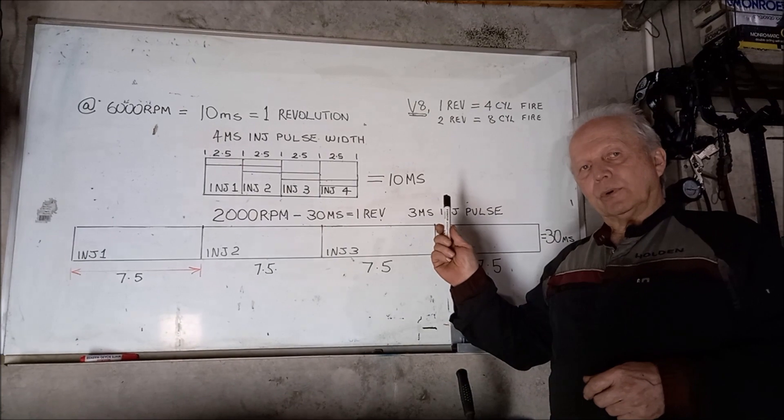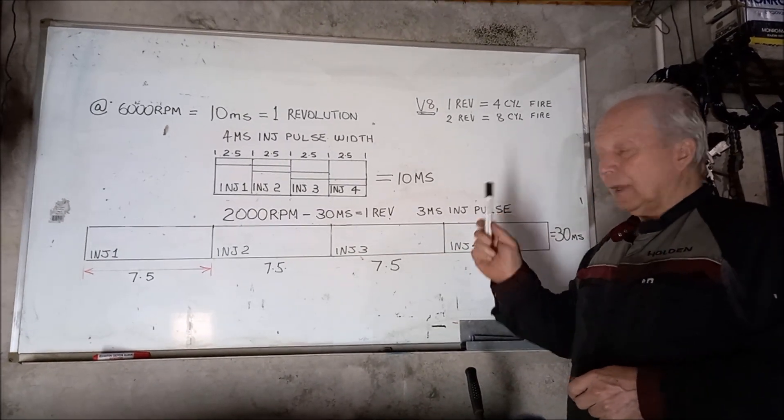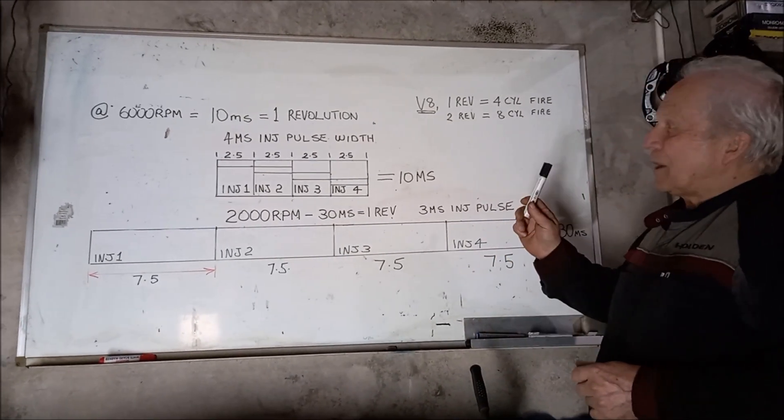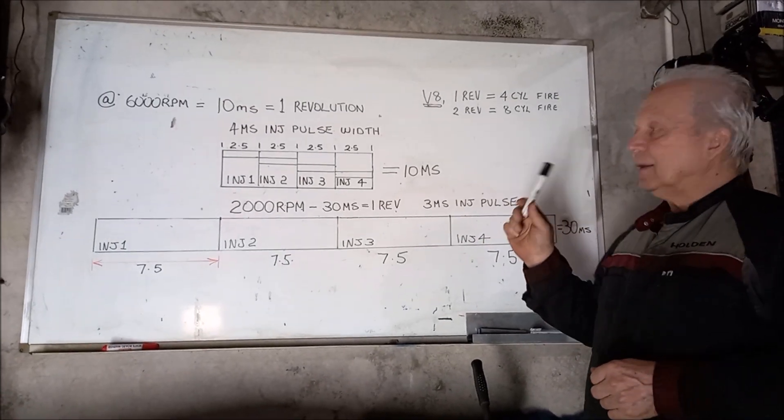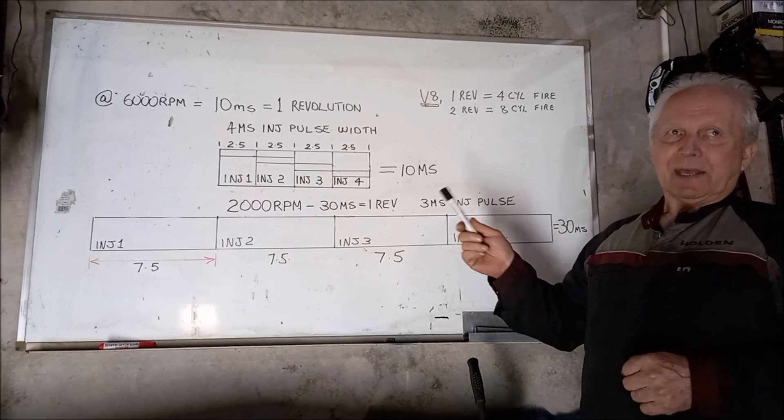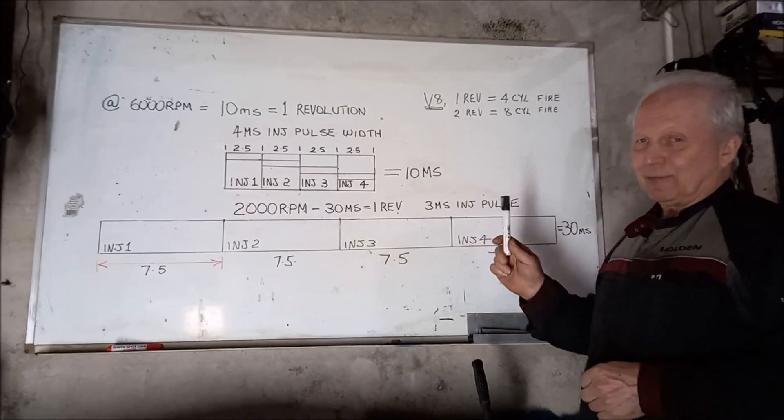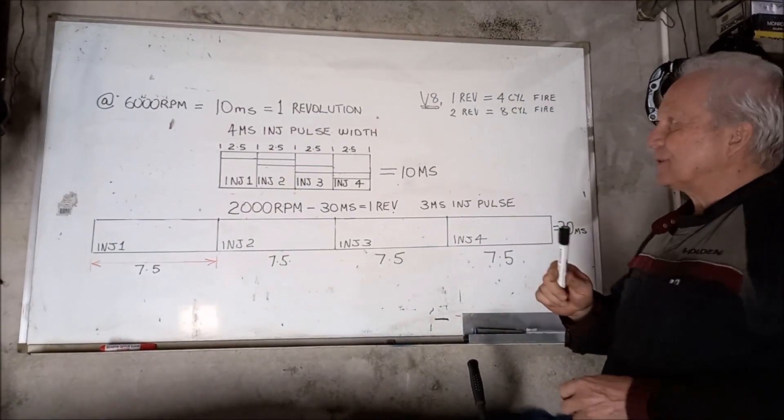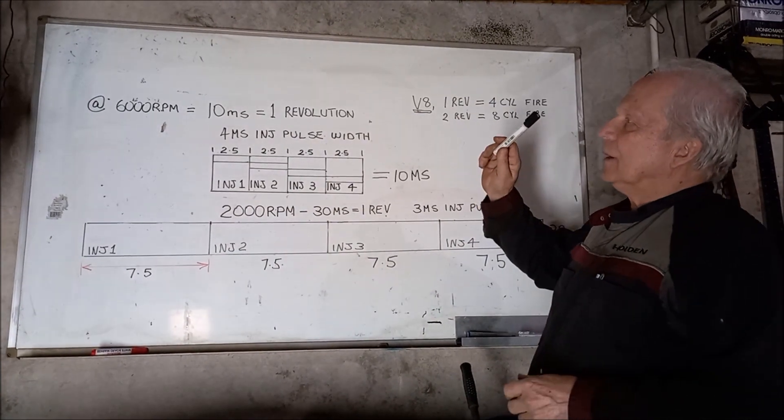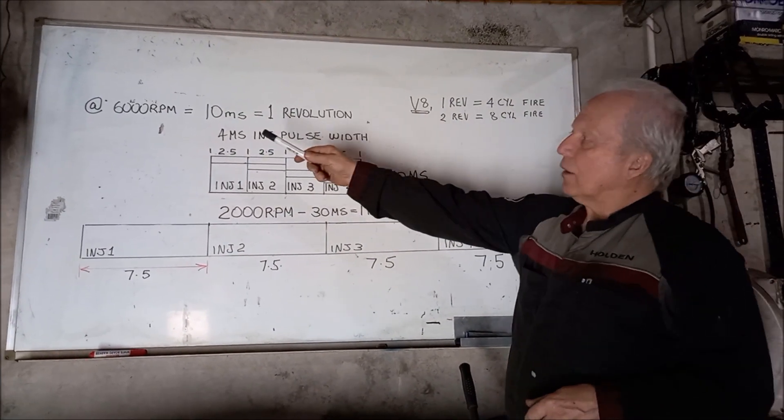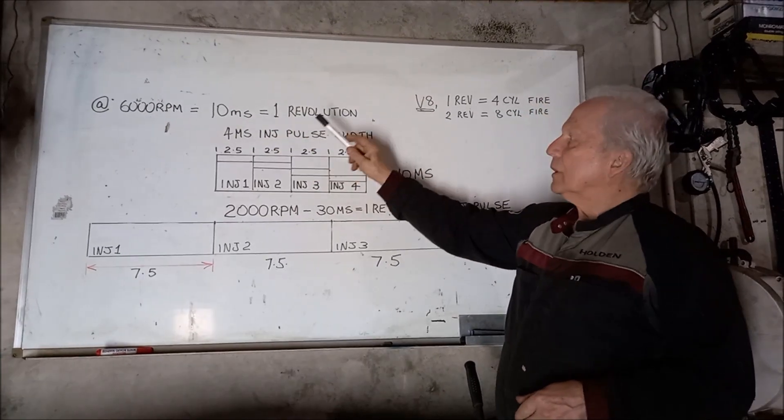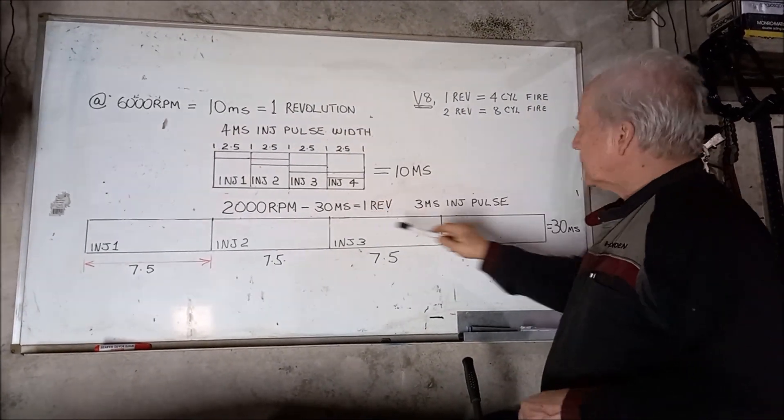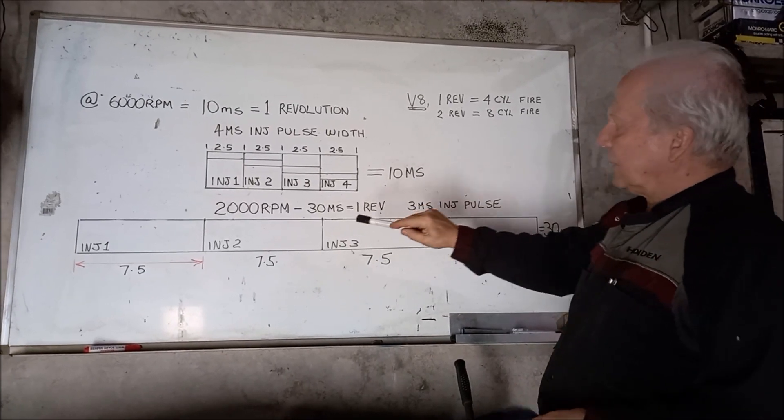So I've got my whiteboard ready here. I'm going to try and explain what I think is happening, so we're going to delve into some maths and some milliseconds. When the engine is turning over at 6000 rpm, it takes 10 milliseconds to do one revolution. And I've represented that here graphically. This length here is about 10 milliseconds.